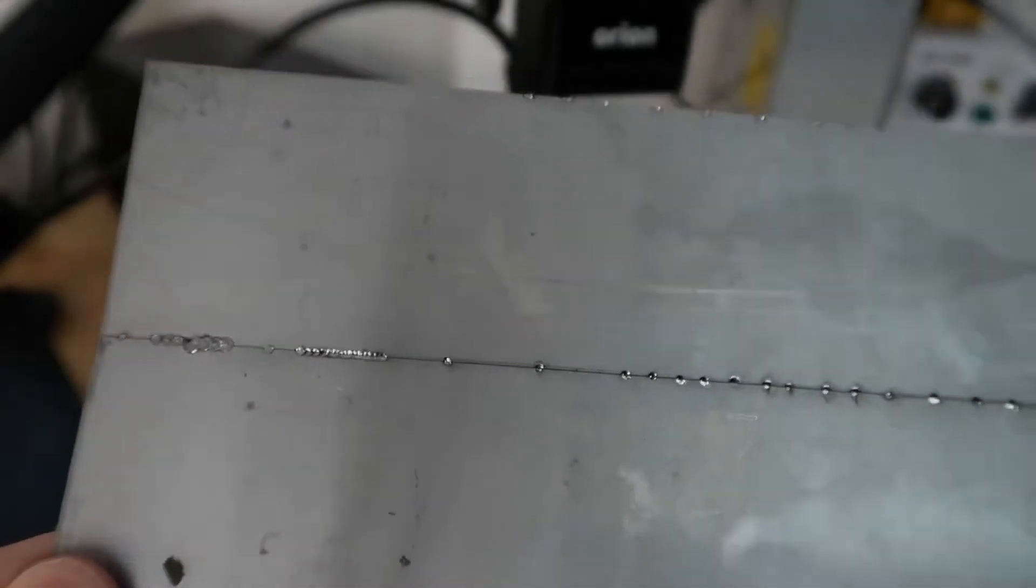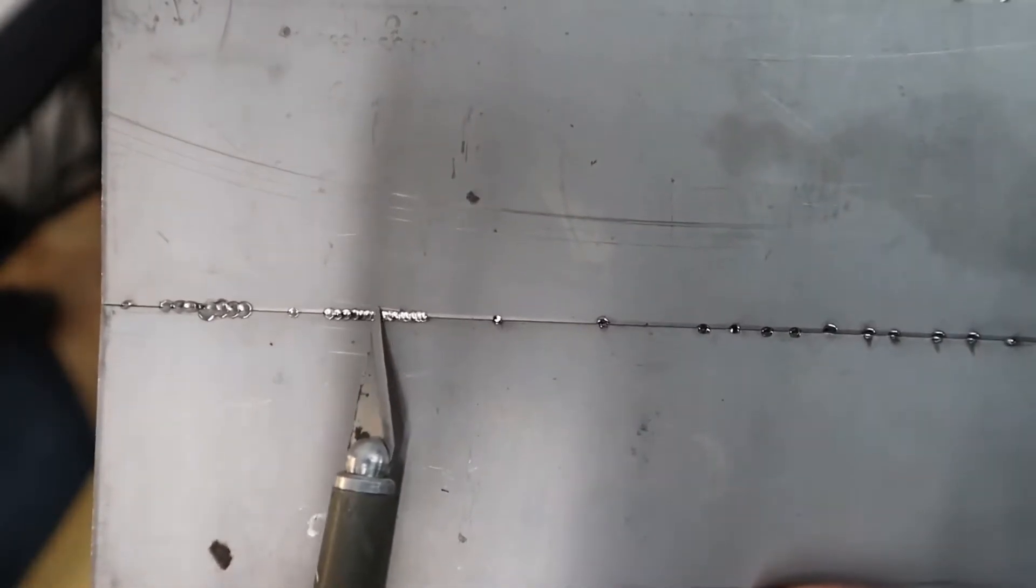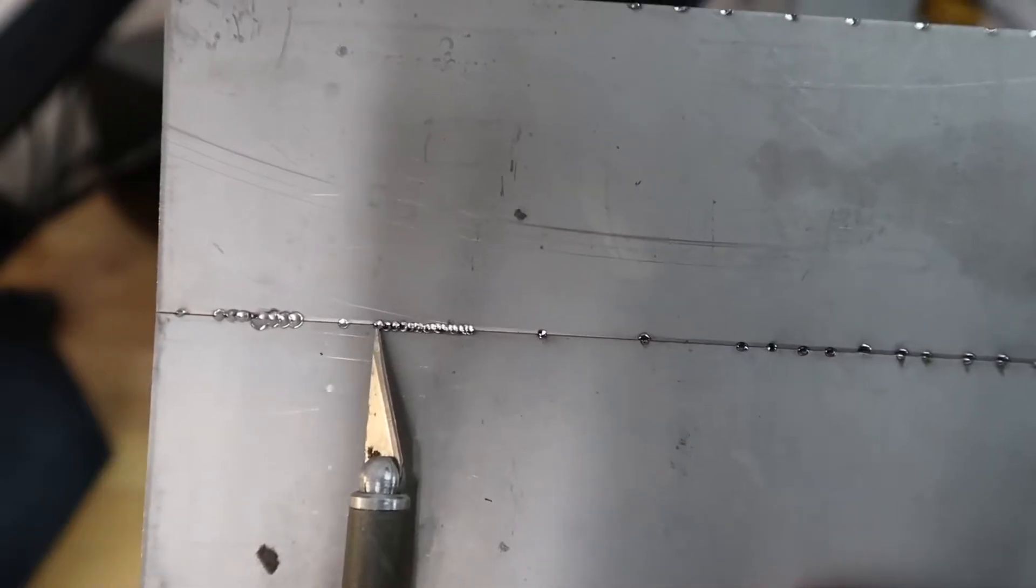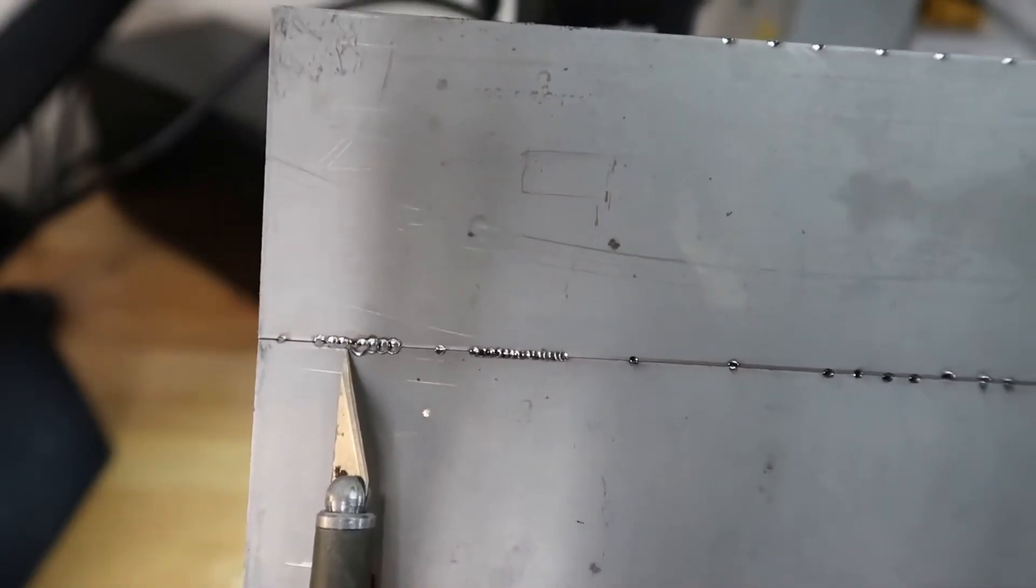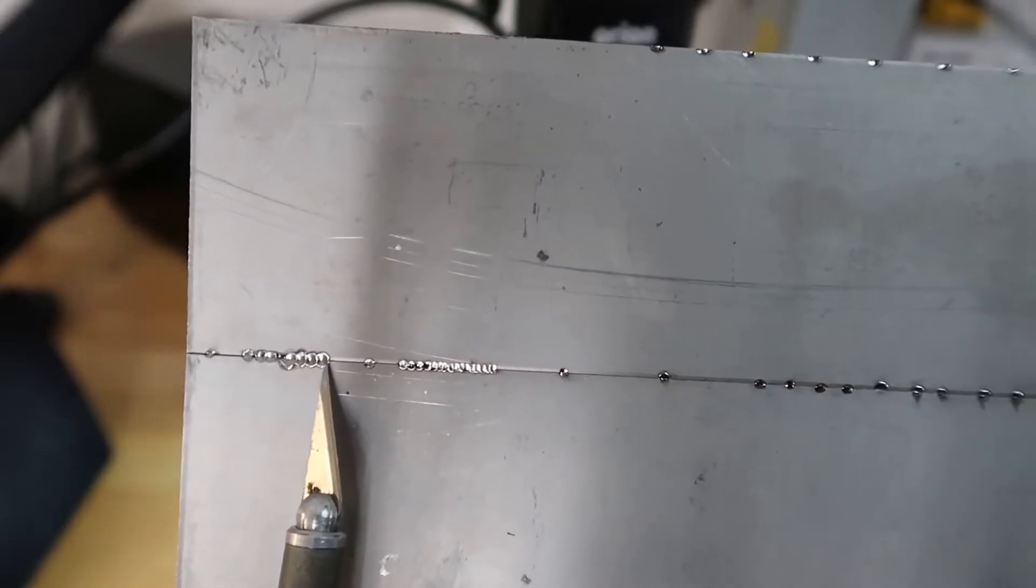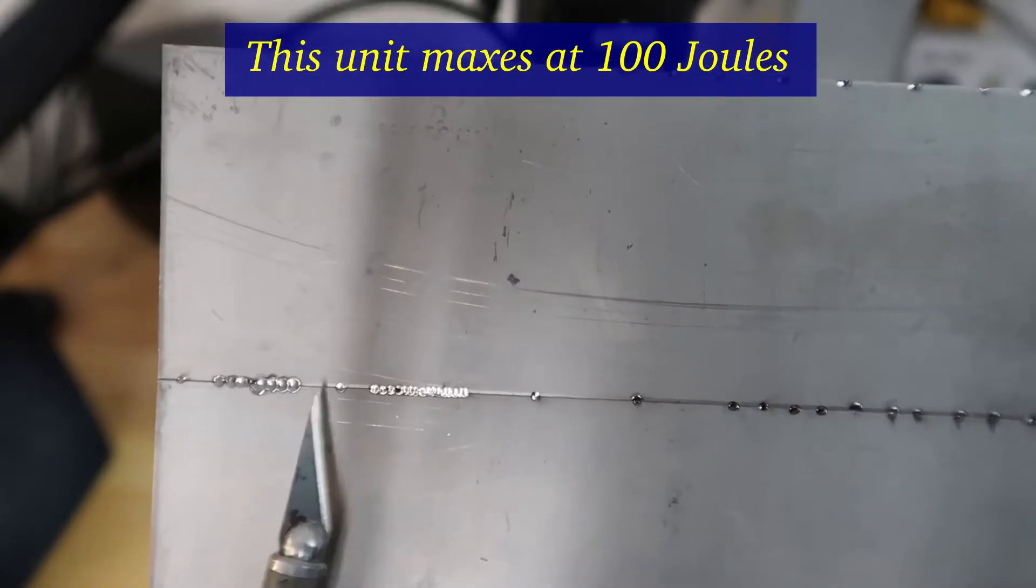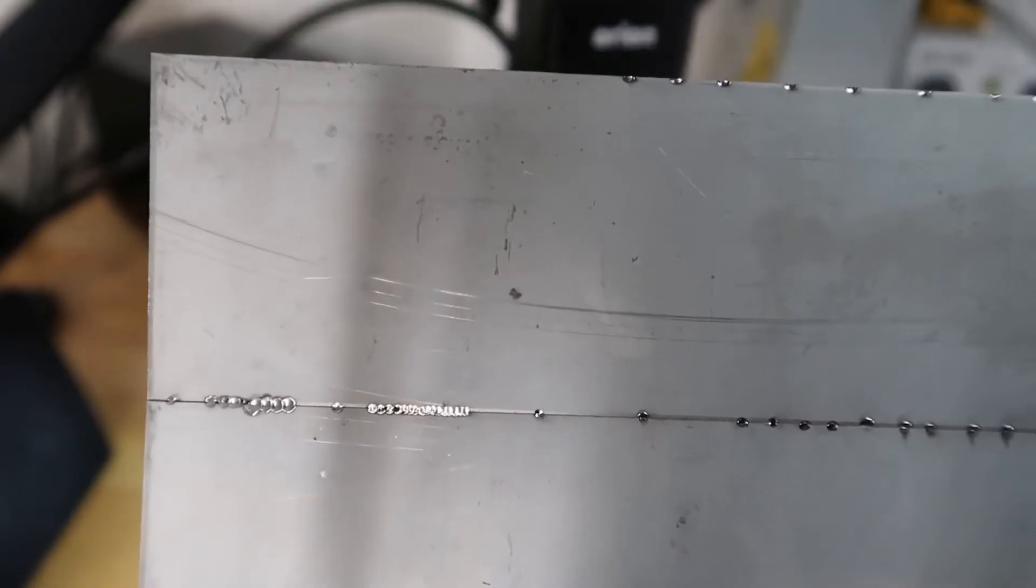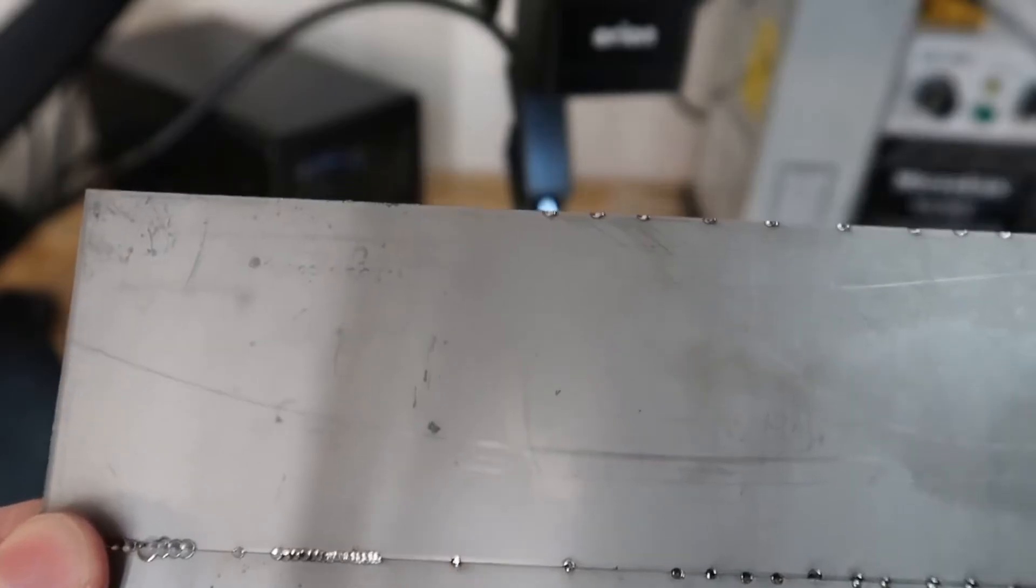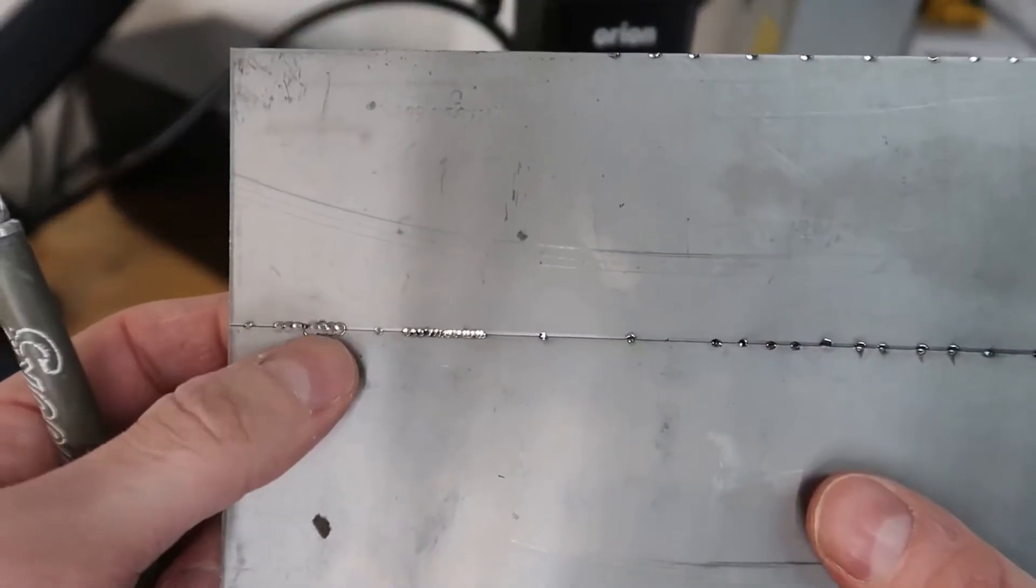So just to show some of the different spot sizes here, these were all done with 16 watt seconds of energy or 16 joules. These guys here were done with 25 and the big ones are about 48 joules per weld. So you can see that the spot size is quite a bit smaller for low energy and quite a bit bigger for high energy. These are something like about an eighth of an inch in diameter for the big guys.